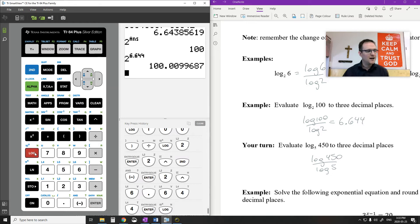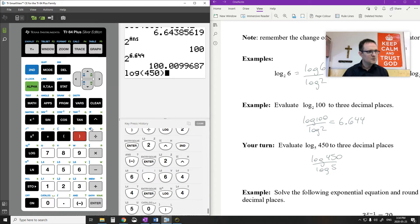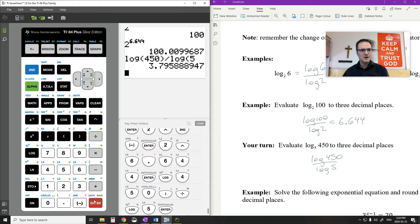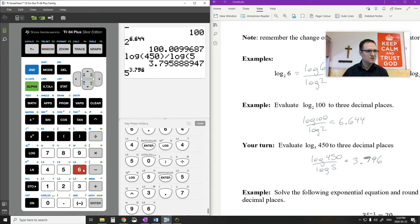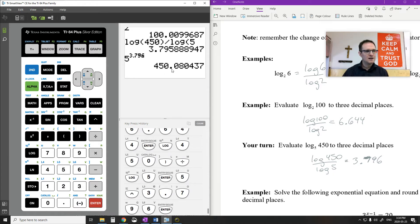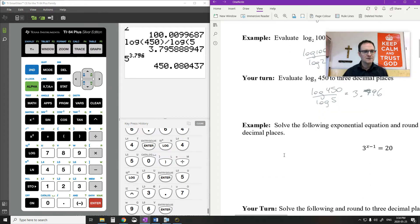And the same thing with this one, like 5 to the power of something should be 450. I'm going to go log 450 divided by log 5. My answer would be 3.796. If I did 5 to the power of that, I get around 450. It's close to that number but not quite the same because I did round it.